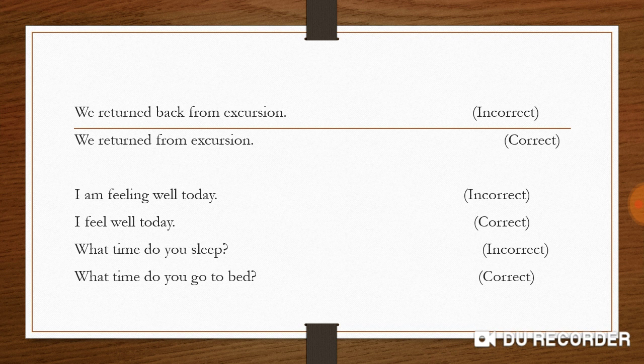Next: 'I am feeling well today.' Continuous tense is never used here. For permanent or longer-period states, we use present simple tense. As discussed in the present simple tense video, this is not a temporary action. The correct sentence is: 'I feel well today.'